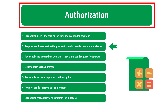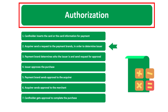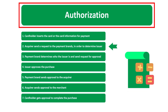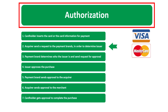Step number two of the authorization: the acquirer sends a request to the payment brand in order to determine the issuer. The acquirer — the bank of the merchant — is going to send a request to the payment brands. The payment brands might be Visa, Mastercard,